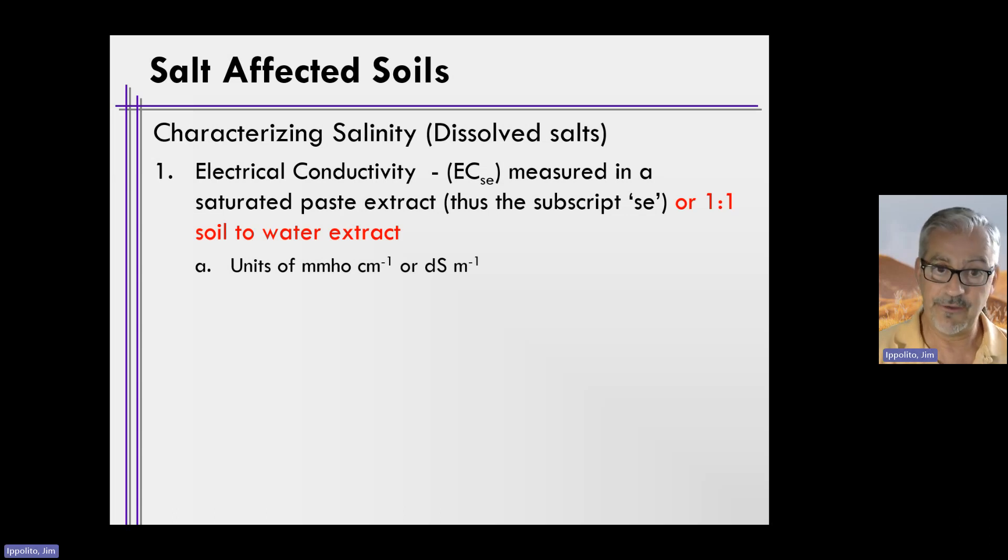If you are a geeky scientist like myself, you will use the SI units, which are deci-siemens per meter, and they equal one another, which is really nice when you want to go from English to metric. They're the same in terms of if you had one millimho per centimeter, you would have one deci-siemens per meter, and the units are goofy.